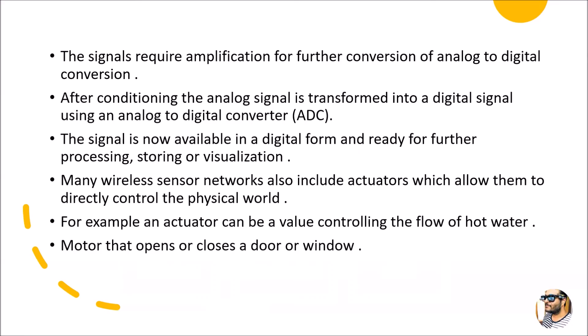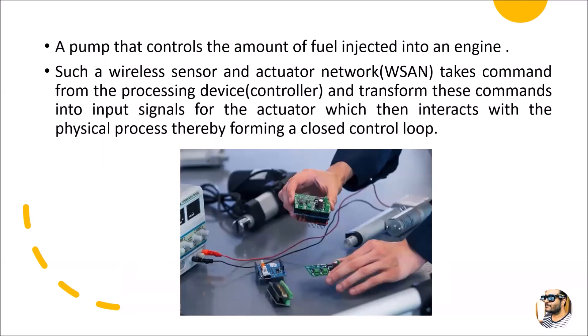A good example of an actuator is a valve controlling the flow of hot water, or a motor that opens or closes a door or window, or a pump that controls the amount of fuel injected into an engine. Such a wireless sensor and actuator network — WSAN — takes commands from a processing device like a controller or processor and transforms these commands into input signals for the actuators. Actuators can be motors, lights, propellers, or anything that gives an output or runs a robot, interacting with the physical process and forming a closed control loop.